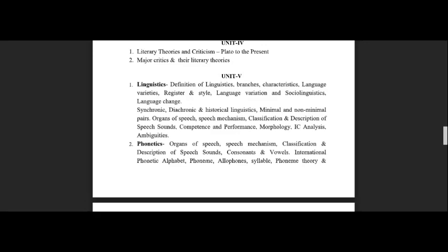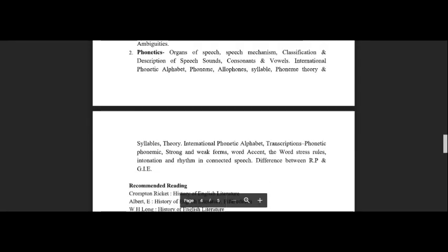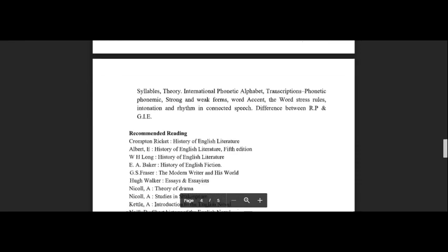In Unit 5, we have Linguistics, which you have studied in your MA across four semesters. Topics include Register, Style, Language Variation, Synchronic, Diachronic, and Morphology. Then Speech Sounds — description, Organs of Speech, consonants, vowels, Phonetic alphabet, Phoneme, and Allophones. You will have studied all of these things in your MA, and there are many definitions you should know.